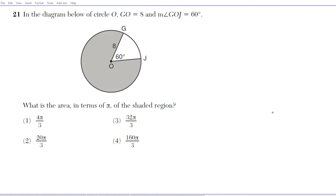Alright, let's take a look at question number 21. It reads, in the diagram below of circle O, GO is equal to 8 and the measure of angle GOJ is 60 degrees. Question, what is the area in terms of pi of the shaded region?